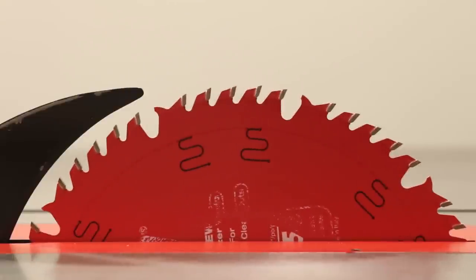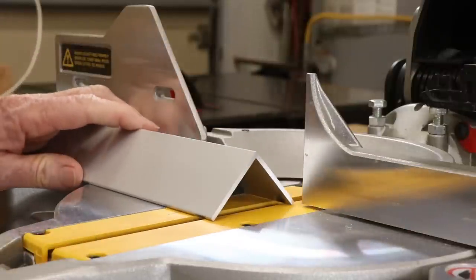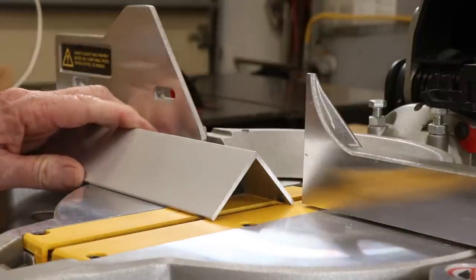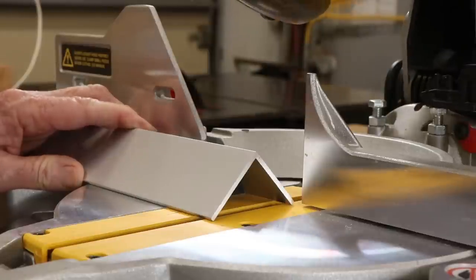In fact, both table saws and miter saws can cut aluminum and brass easily. They use blades with carbide tips. Tungsten carbide is much, much harder than these soft metals. You don't need to worry about the cutting edges on your blades.